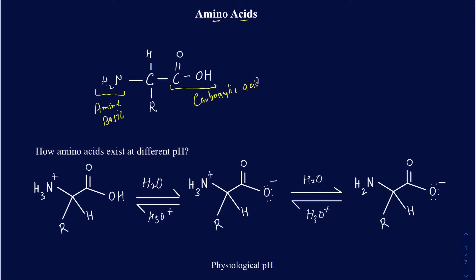It doesn't necessarily mean you cannot protonate those. You can still protonate those, but their nature is to be basic in general. So you have both the acid and the base on the same compound. And then what you have in between the amine group and this carboxylic acid group is this carbon right there. And this carbon is called an alpha carbon. One of the atoms on this alpha carbon is always going to be H, like we have here on the top.